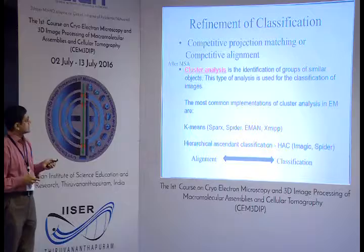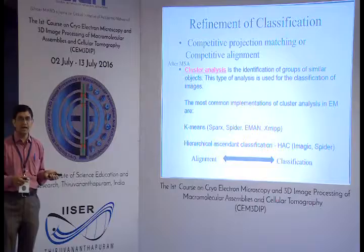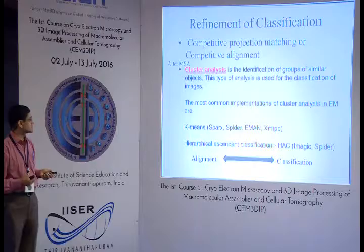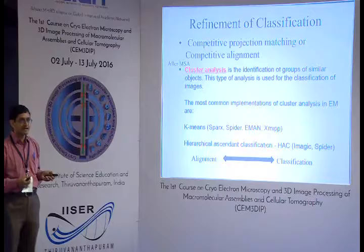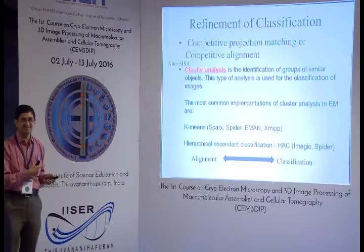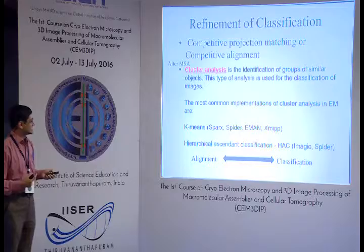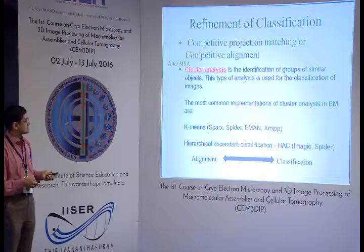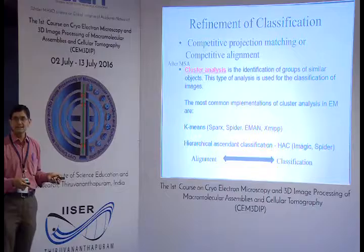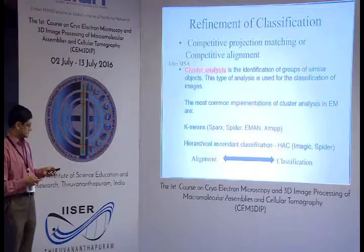After MSA, classification is done using eigen images. MSA uses algorithms such as k-means and hierarchical ascent classification (HAC). The most common implementation in EM is k-means, which is present in all major programs, and hierarchical ascent classification, which is available in IMAGIC. The IMAGIC practicals will use the HAC algorithm for classification.